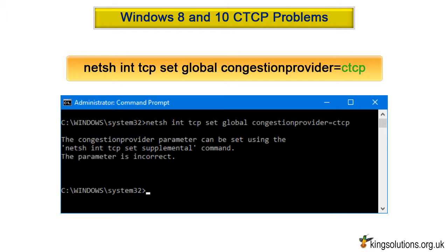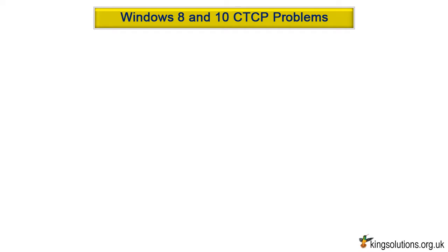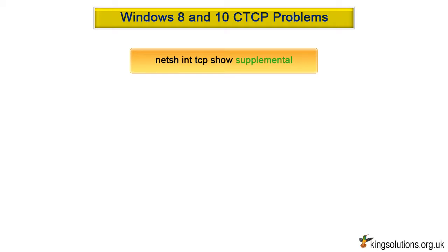The parameter is incorrect. But actually, that instruction does not work either. Congestionprovider=ctcp has been deprecated. To check which congestion provider you're currently using, enter the following: netsh int tcp show supplemental.